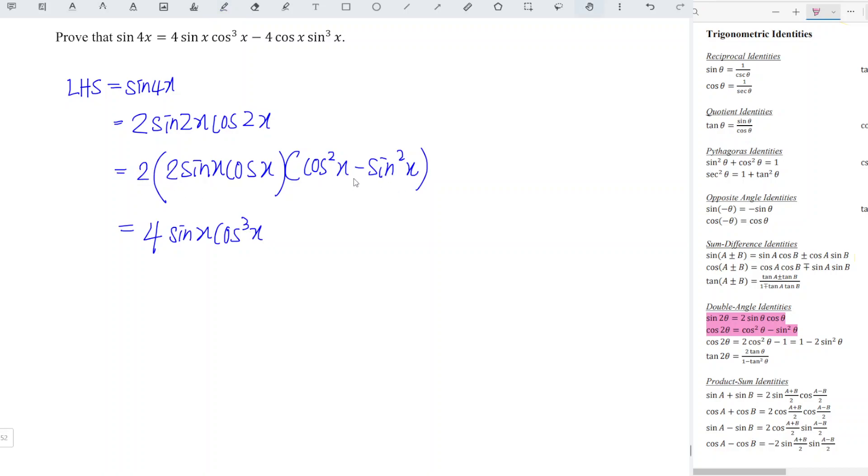We have 2 times 2 times negative 1, which is negative 4. Sine x times sine square x is sine cube x, cos x remains. So we have exactly the same as the right-hand side, and hence we proved.